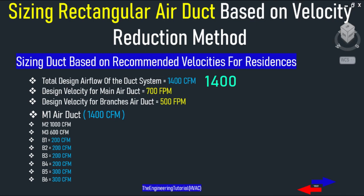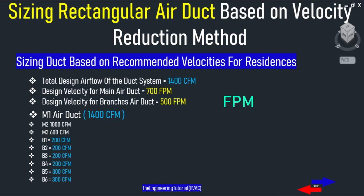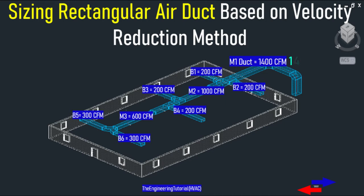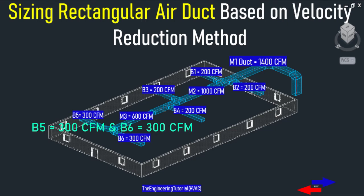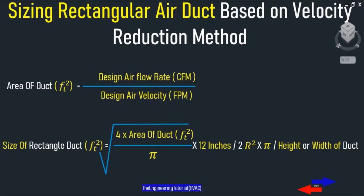For the example, there is a design airflow rate of 1400 CFM and we have been asked to find the sizes of rectangular air ducts at the recommended velocities of 700 FPM for main duct and 500 FPM for branch ducts. As you can see in the example, 1400 CFM flows through the main duct, minus 400 CFM for B1 and B2, leaving 1000 CFM for M2. Again minus 400 CFM for B3 and B4, leaving 600 CFM for M3, minus 300 CFM for B5 and 300 CFM for B6.